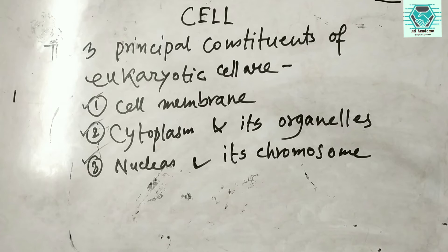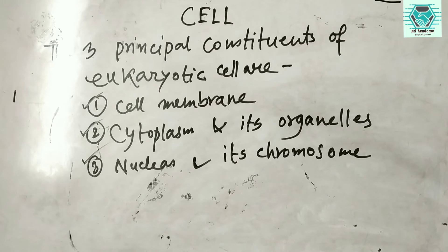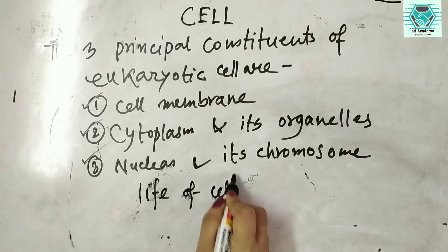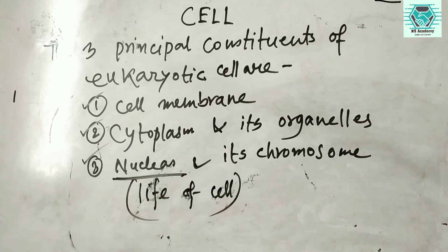The cytoplasm is another vital part of the cell, present within the cell. It acts as a matrix and contains all the membranous organelles of the cell. The nucleus is also called the life of the cell — it is the most important organelle and contains the chromosomes.